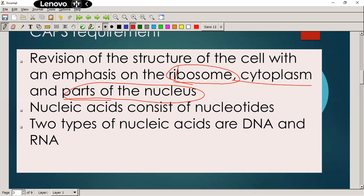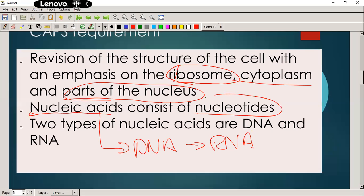We need to know that nucleic acids consist out of what we call nucleotides. That's important - you need to also know the structure of the nucleotides. You also need to know that there's two types of nucleic acids which are DNA and RNA: deoxyribose nucleic acid and ribose nucleic acid.